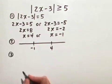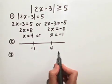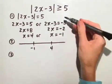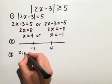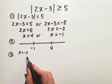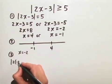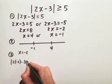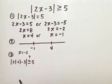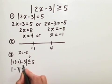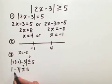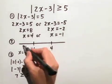Now we're ready for step 3. Let's choose a test point in each of the three intervals and see whether it makes our original inequality true or false. For the interval to the left of negative 1, let's try x equals negative 2. The absolute value of 2 times negative 2 minus 3 is the absolute value of negative 7, which is 7. Since 7 is greater than or equal to 5, that's a true statement.